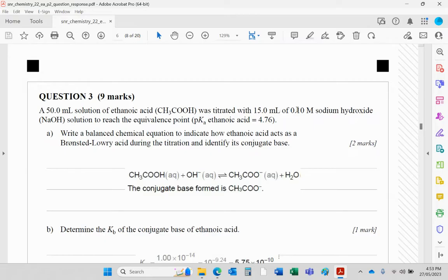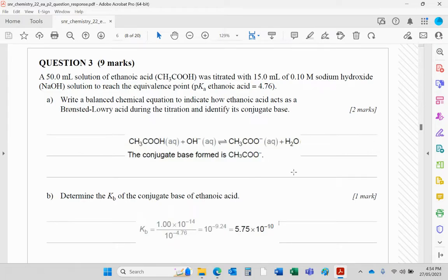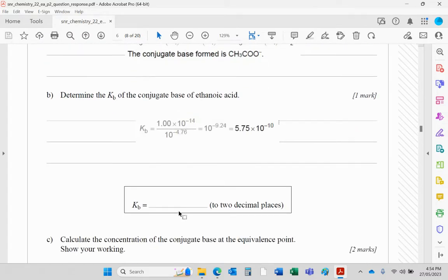50 ml of ethanoic acid titrated with 15 ml of 0.1 molar sodium hydroxide to reach the equivalence point, pKa of ethanoic acid given. Balanced equation to indicate how ethanoic acid acts as an acid: reacting with the hydroxide ion from sodium hydroxide to form that. Identify the conjugate base. Well, once it loses its proton, it becomes its conjugate base. The Kb for the base then is worked out by: we've got the pKa of ethanoic acid is 4.76. That means its Ka would be 10 to the minus 4.76. It's the same as H+ and pH, same relationship. And then, Ka times Kb is 10 to the minus 14. So effectively, a bit of rearranging, and we get Kb. Write it in the correct place please.